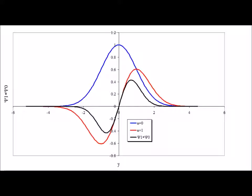It is a postulate of quantum mechanics that eigenfunctions of an operator with different eigenvalues are orthogonal to each other. Here we see in blue the n equals zero state and in red the n equals one state for the quantum harmonic oscillator. Since they are eigenfunctions with different eigenvalues, we know that they must be orthogonal.